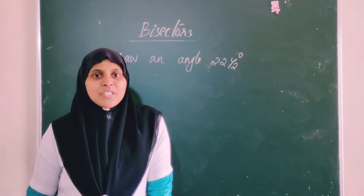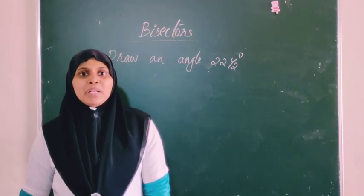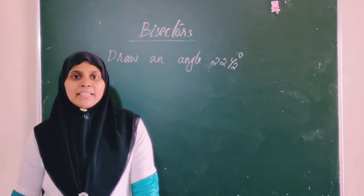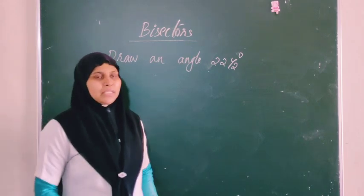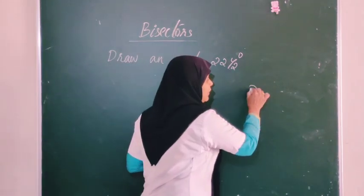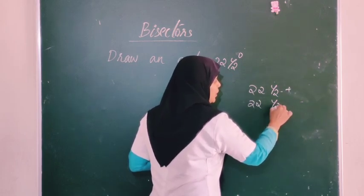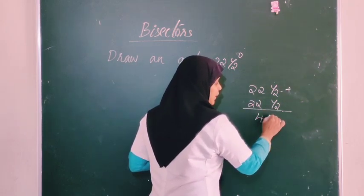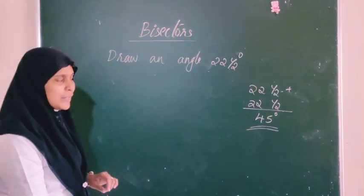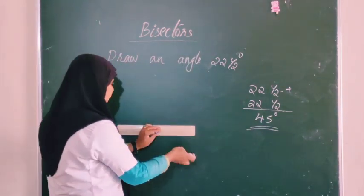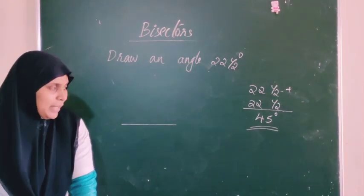Our next question is: draw an angle of 22.5 degrees. 22.5 degrees is not directly measurable with a protractor. So we will construct it. 22.5 degrees is equal to half of 45 degrees. We first draw 45 degrees, then bisect it. We place the compass at this point and draw the baseline.